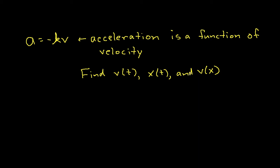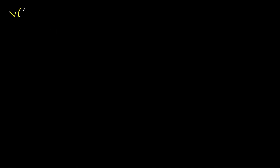If you don't like derivations at all, close your eyes for a minute — it won't be that painful. Let's begin with finding the velocity as a function of time. We'll start by noting that acceleration is the derivative of velocity with respect to t, and in this problem we have the acceleration expressed as a function of velocity.